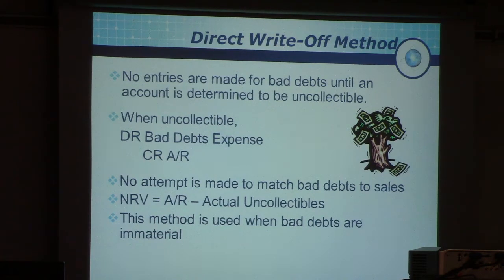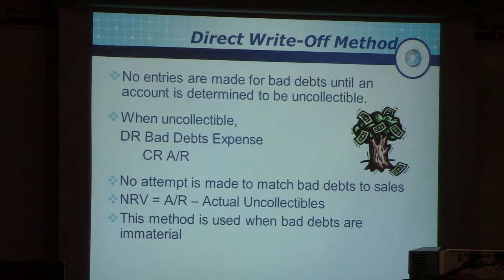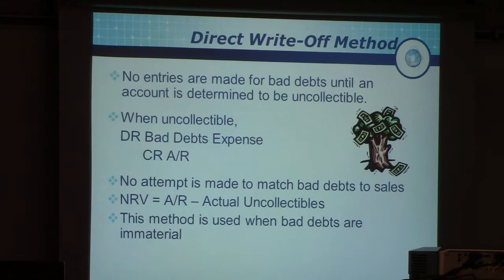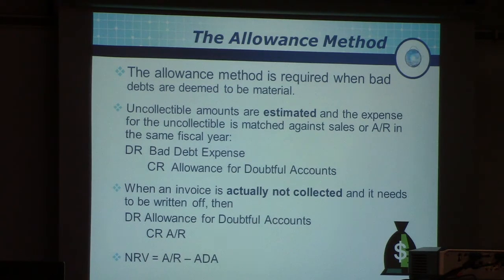With the direct write-off method, no entries are made until bad debts actually happen. When they do, you debit bad debts and credit AR, and NRV equals AR minus the actual uncollectibles. This method is used when bad debts are not material — not large in dollars or percentages. It is not used for most businesses; it may be used for smaller businesses or those doing their own bookkeeping. However, it is not recommended. Most companies use the allowance method.